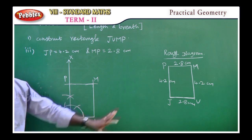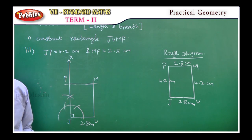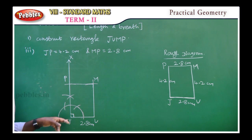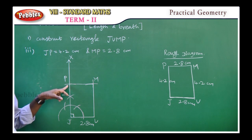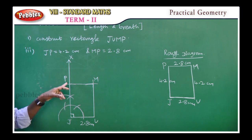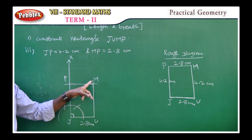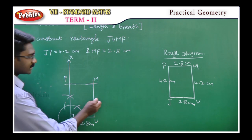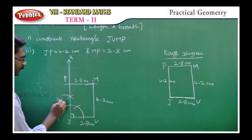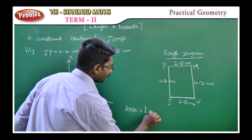Rectangle construction summary — first method, length and breadth: rough diagram, JP = 4.2, MP = 2.8. First, construct base line segment JU. Then perpendicular line construction at J using compass. With J as center and 4.2 cm radius, mark point P. With P as center and 2.8 cm, and U as center and 4.2 cm, mark point M. Join to complete JUMP. Area equals L into B square units.